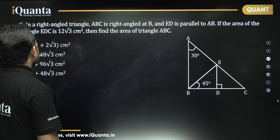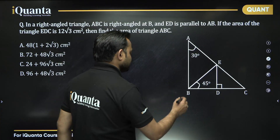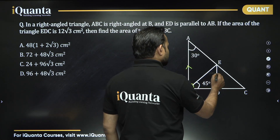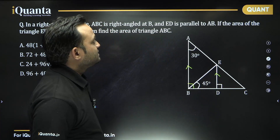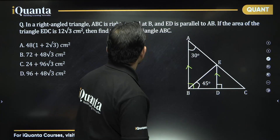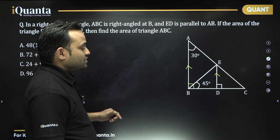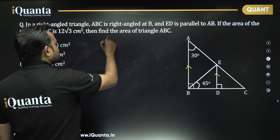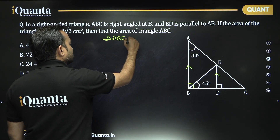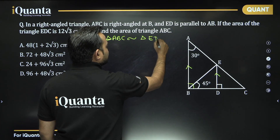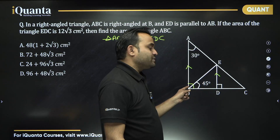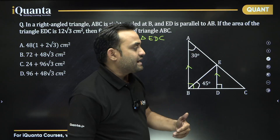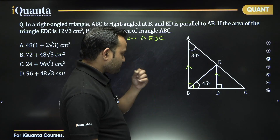Next is an amazing question based on similarities. In a right-angled triangle ABC right-angled at B, ED is parallel to AB. This means ED is perpendicular to BC. If the area of triangle EDC is 12 root 3, find the area of triangle ABC. We know that triangles ABC and EDC will be similar to each other, because angle B is 90 degrees, angle D is 90 degrees, and angle C is common. By the AA rule, both triangles are similar.